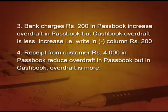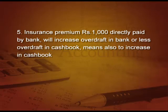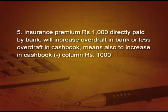Point number 4: receipt from a customer 4,000 in the pass book has reduced the overdraft in pass book only, but in cash book the overdraft is more, so now reduce in cash book — take it to the positive column. Point number 5: insurance premium 1,000 directly paid by bank will increase the overdraft in pass book, meaning there is less overdraft in cash book. Now we have to increase in cash book, so write in the minus column 1,000 rupees.